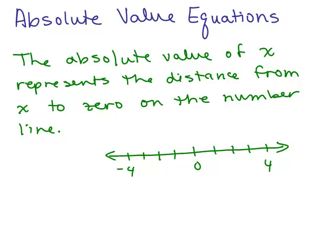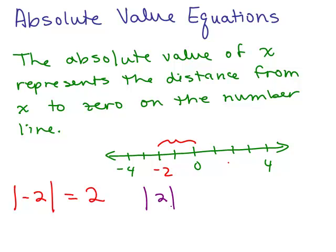So x is some number. Let's say we wanted to get the absolute value of negative 2. Here's negative 2, and if we just count the spaces to 0, it's 2 spaces away, so the absolute value of negative 2 is 2. What if we wanted the absolute value of positive 2? Here's positive 2, and if we count how far away 2 is from 0, it's also 2 spaces away. So the absolute value of 2 is also 2.